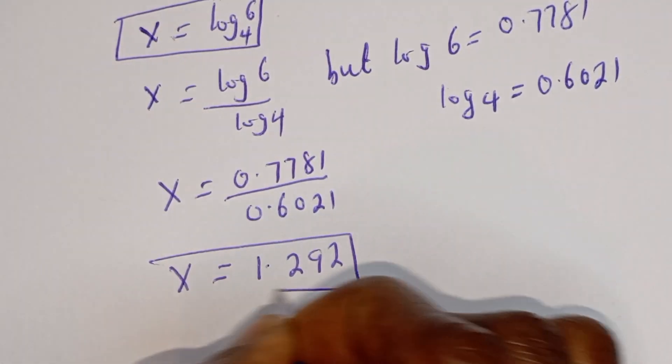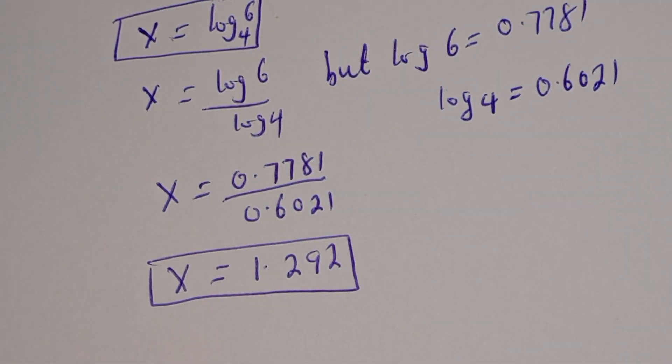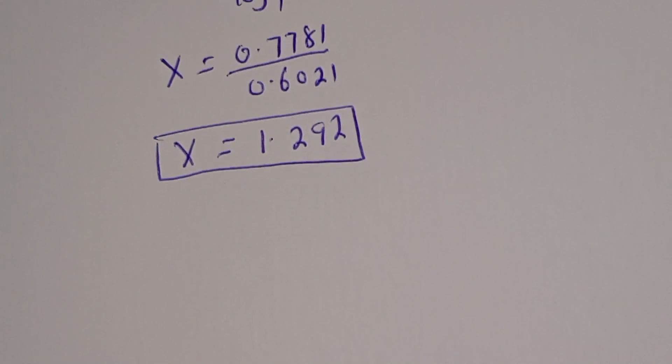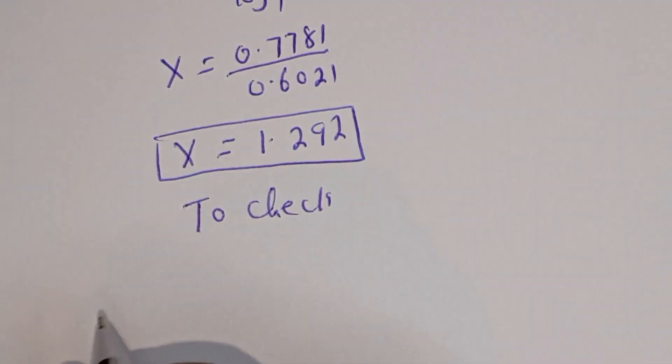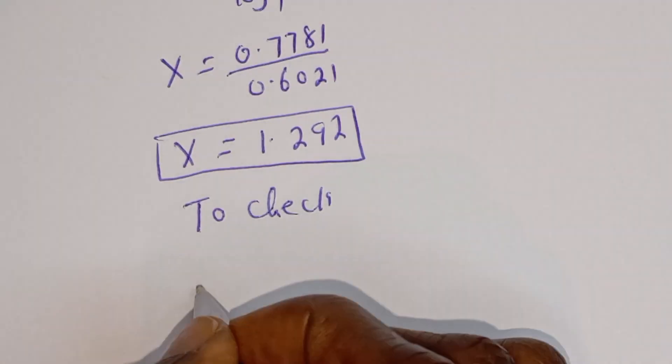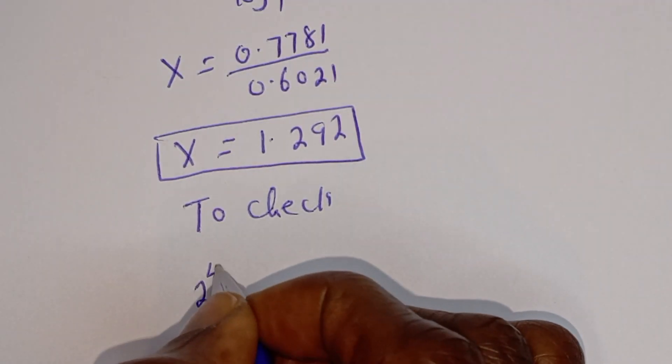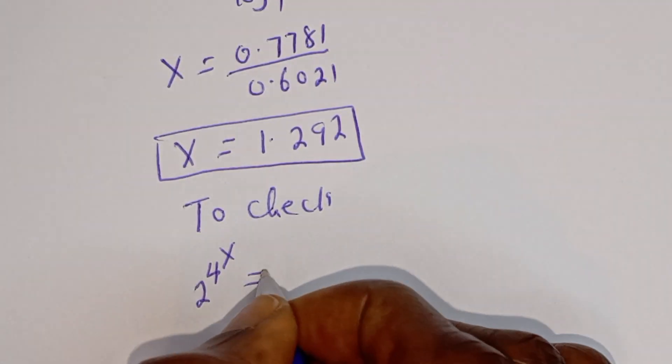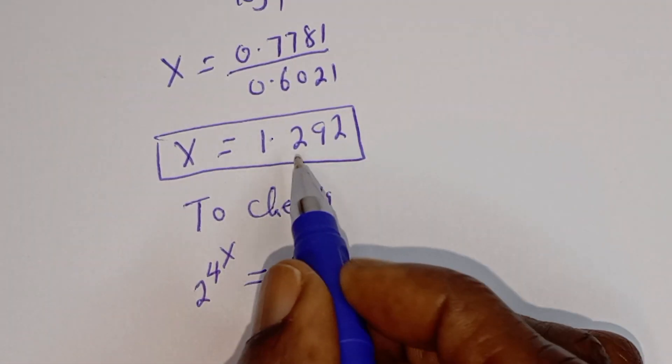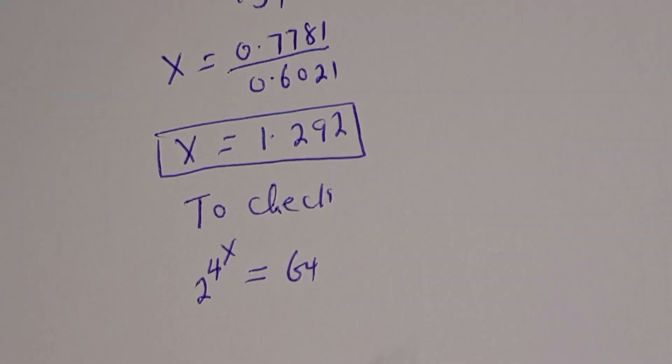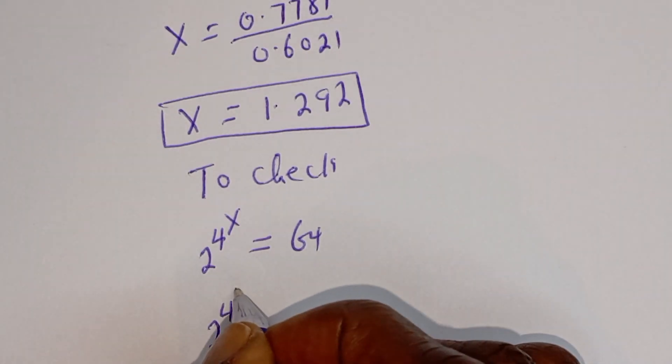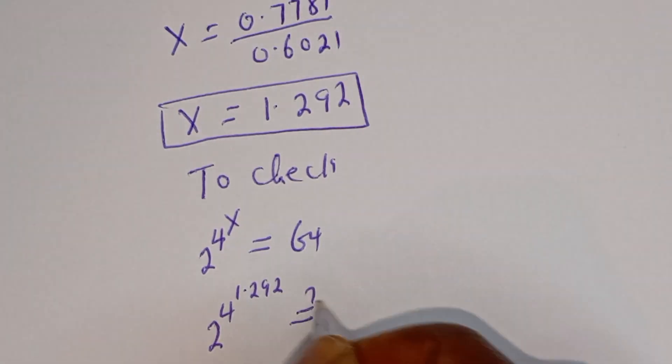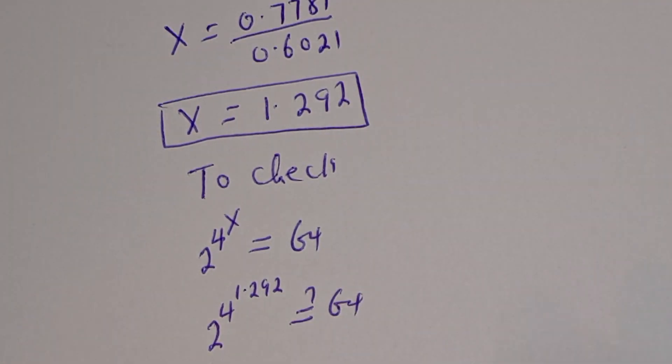This is the final answer. Then we can check to confirm if our answer is right or wrong. Let's check. To check, we have the given equation, 2 to the power of 4 to the power of s is equal to 64. Then when s is equal to 1.292, this is 2 to the power of 4 to the power of 1.292 must be equal to 64.